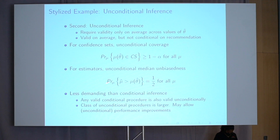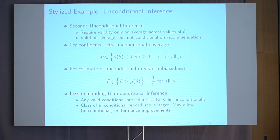Alternatively, I could think about unconditional validity, where I require validity only on average across different treatment recommendations I might make, not conditional on a given recommendation. For confidence sets, this corresponds to unconditional coverage probability being at least 1 minus alpha. For estimators, this corresponds to the unconditional overestimation probability being one-half. The law of iterated expectations tells us that unconditional validity is less demanding than conditional validity: if you give me a conditionally valid procedure, it's also unconditionally valid. That also means the class of unconditional procedures is larger, so if all I care about is validity on average, I may be able to obtain better performance.